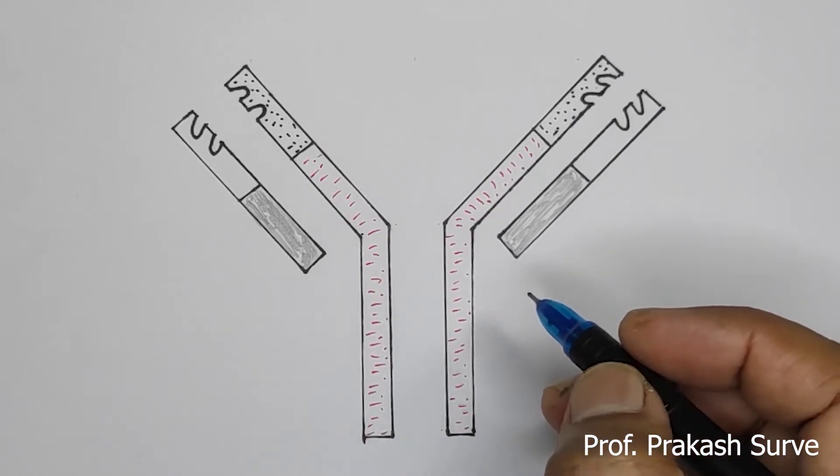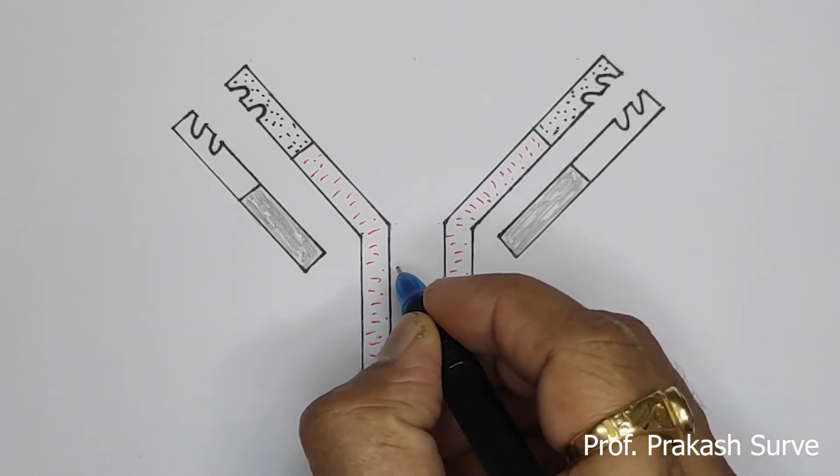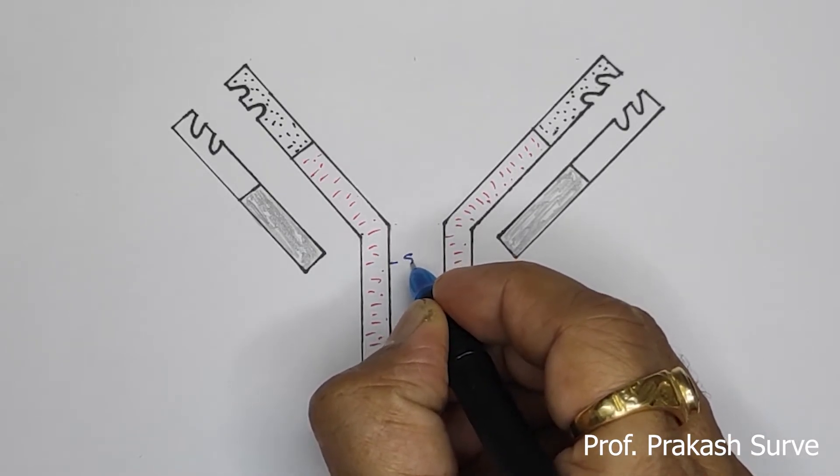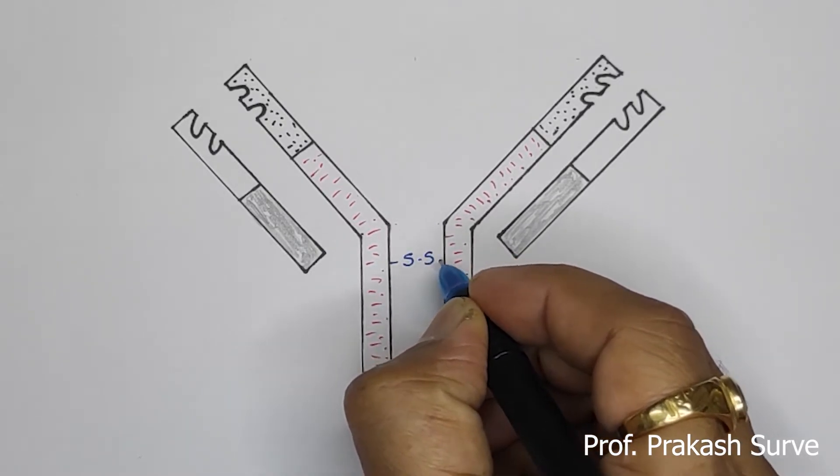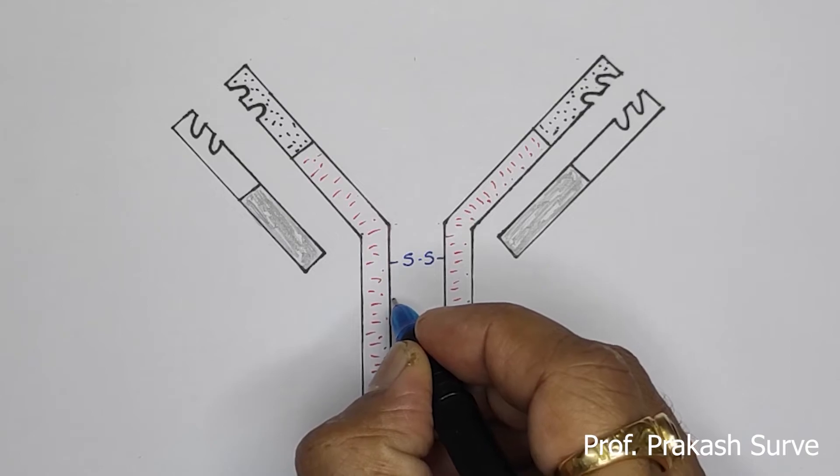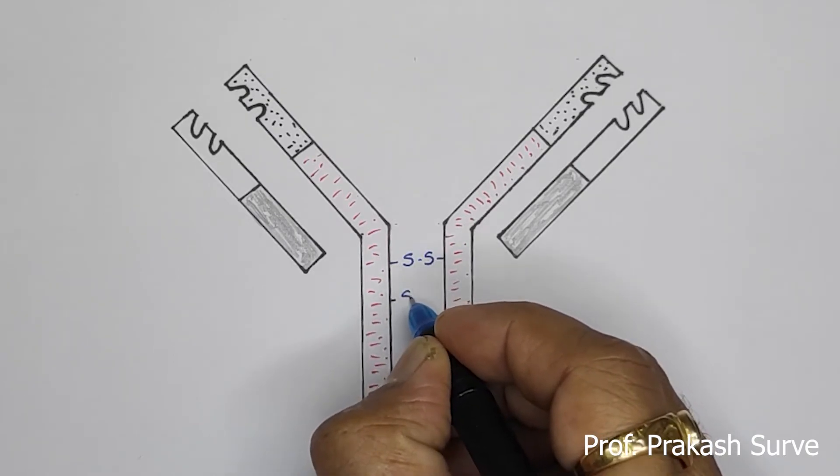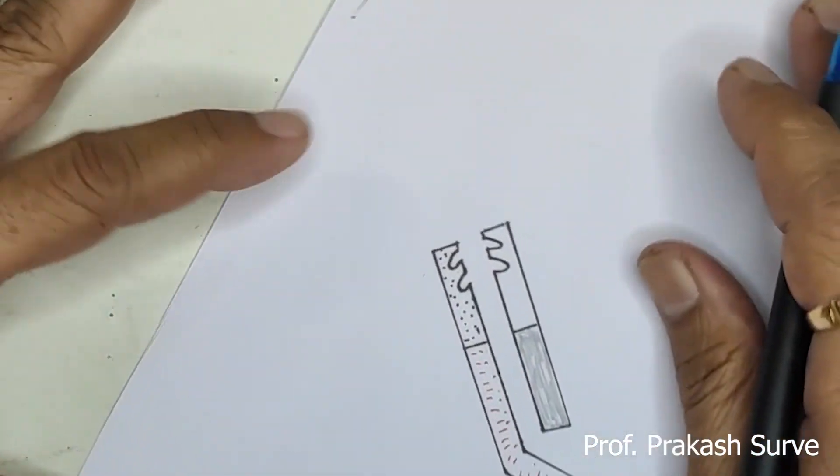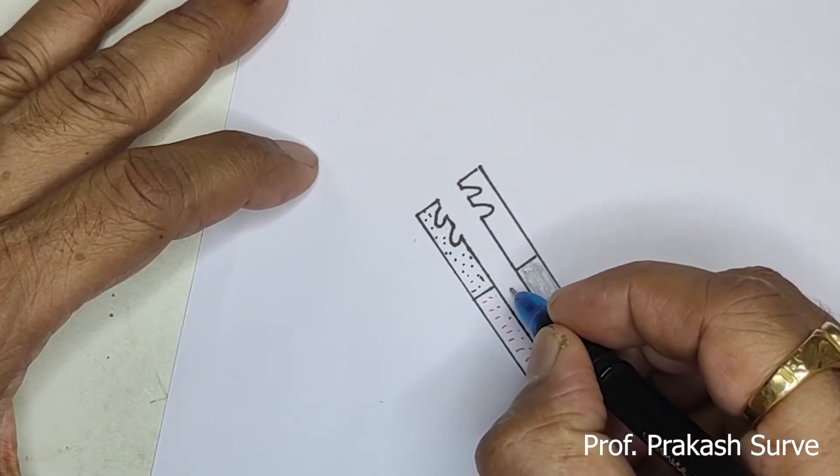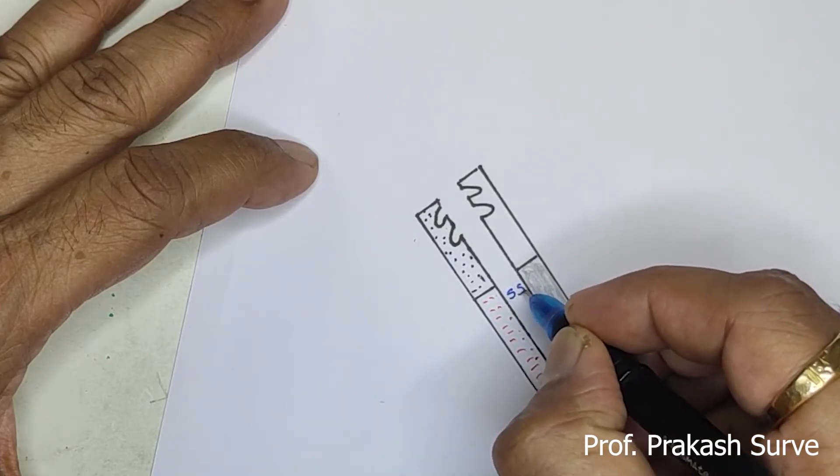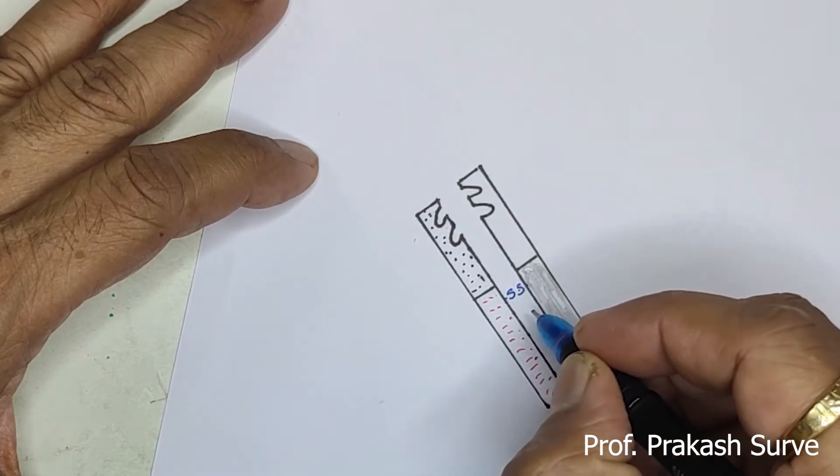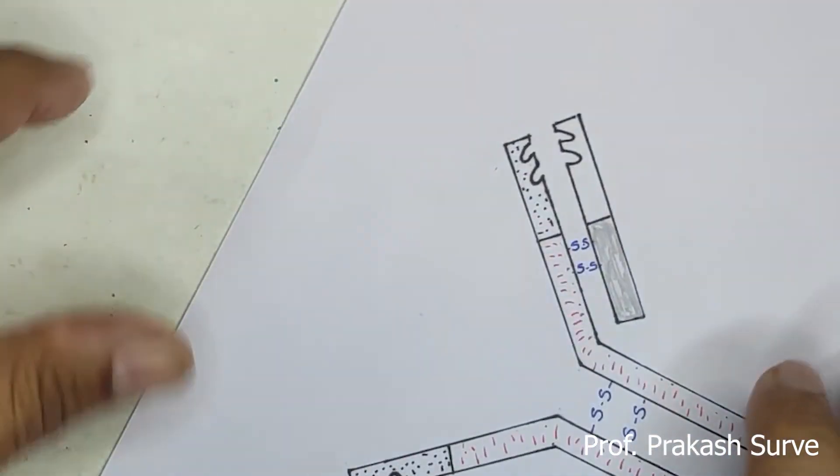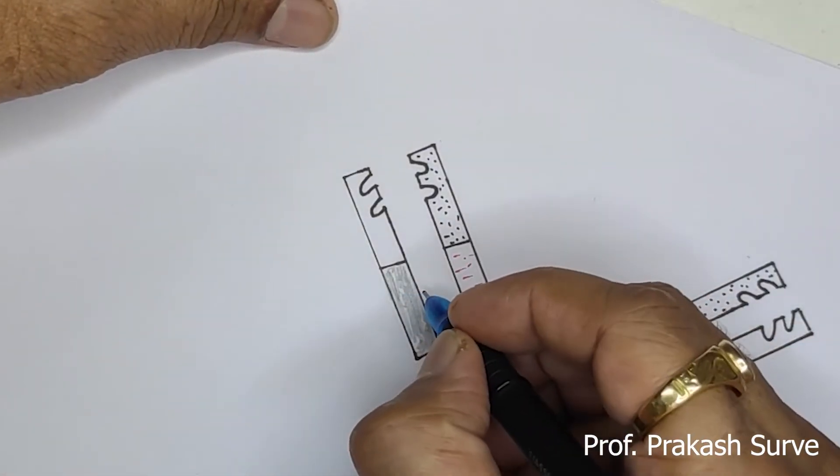We will make the disulfide bond here also, and same way here also, same way here also, same way here also, here also.